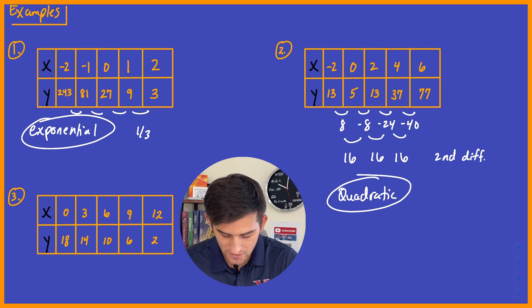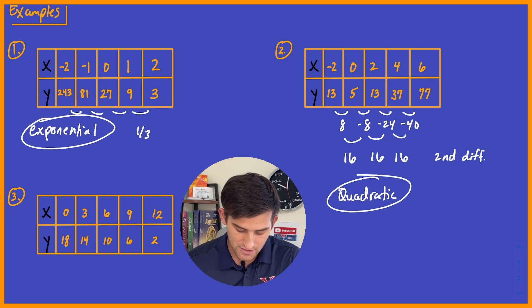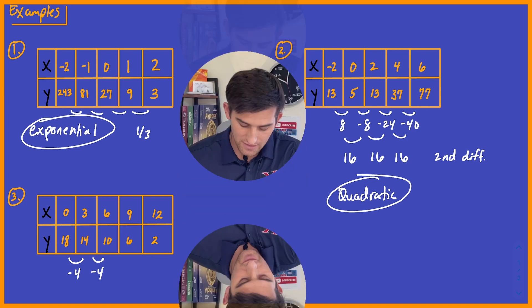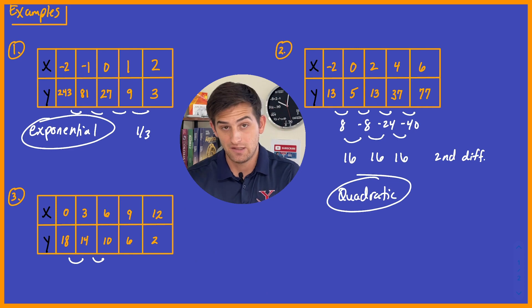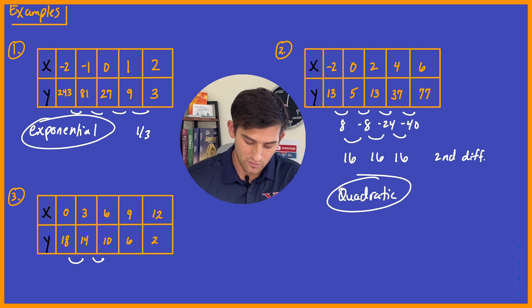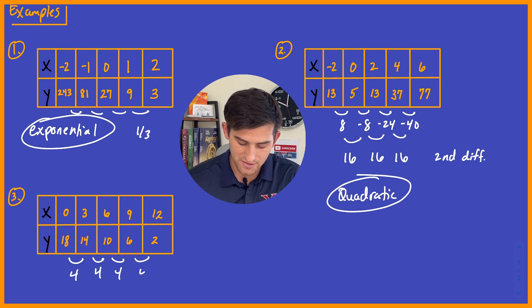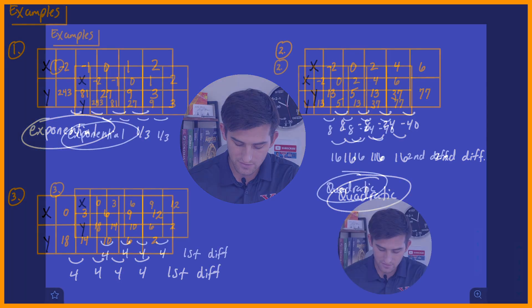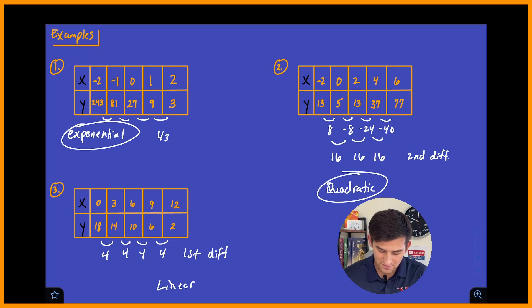So we have 18, 14, 10, 6, and 2. So it does look like we are just subtracting 4 each time. If I think about it the same way I did number two, 18 minus 14 would be 4, 14 minus 10 is 4, 10 minus 6 is 4, and 6 minus 2 is 4. So those would be our first differences, and those are constant. So yes, you guessed it. Number three would be a linear function, and that's how we can determine whether we have a linear, exponential, or quadratic function from a table of values.